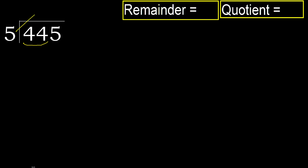5 multiplied by which number is nearest to 44 but not greater? 5 multiplied by 9 is 45 — 45 is greater. Multiplied by 8: 40 is not greater.